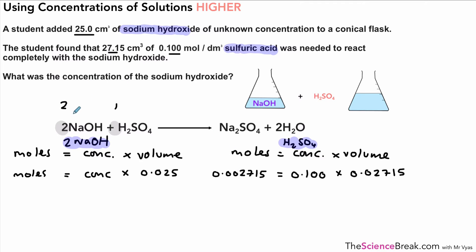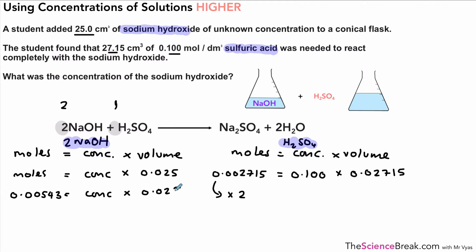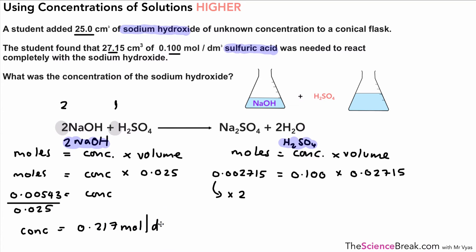In the balanced equation there is a 1:2 ratio of sulfuric acid to sodium hydroxide, so we multiply 0.002715 × 2 = 0.00543 moles of NaOH. Setting 0.00543 = concentration × 0.025, and dividing both sides by 0.025 gives a concentration of 0.217 moles per decimetre cubed. The question uses three decimal places, so we keep our answer to three decimal places: 0.217 mol/dm³.